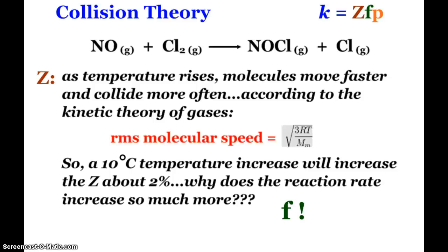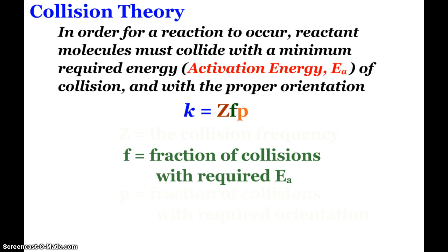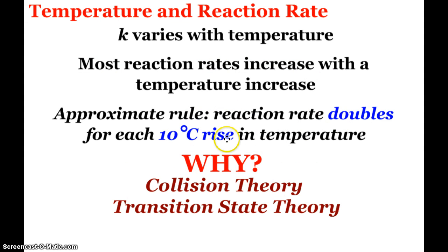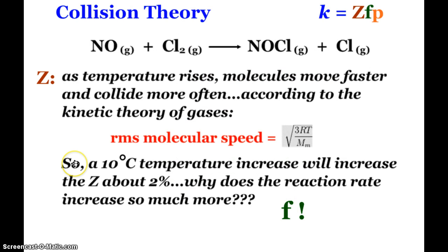We can remember back to the kinetic theory of gases. The root mean square molecular speed was given by the square root of 3RT over molar mass. Long story short, a 10 degree Celsius temperature rise will increase Z about 2%. But we said it doubles for each 10 degree rise in temperature, so this 2% doesn't cover it all. Why does the reaction rate increase so much more? The answer lies in F.